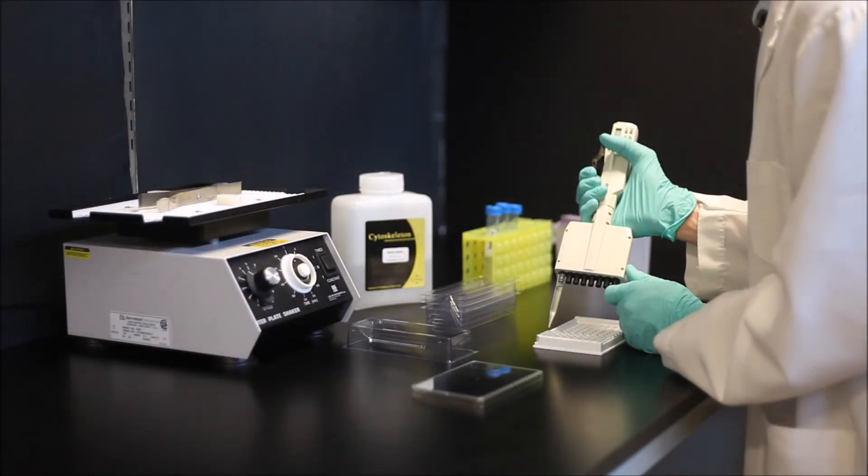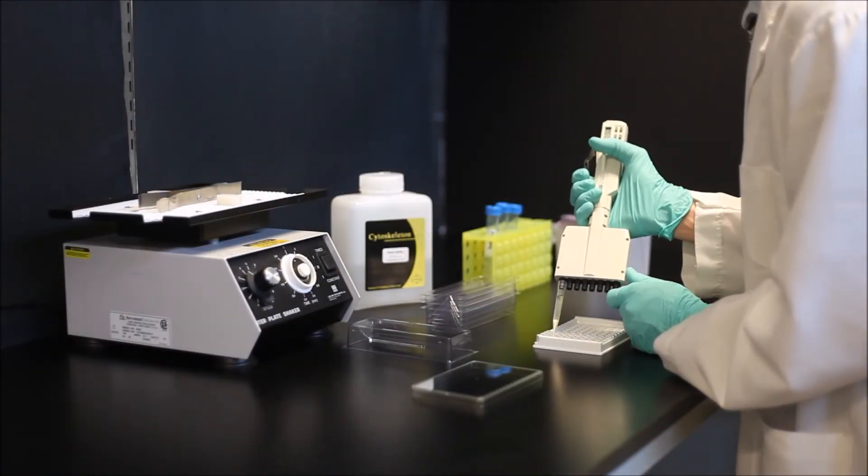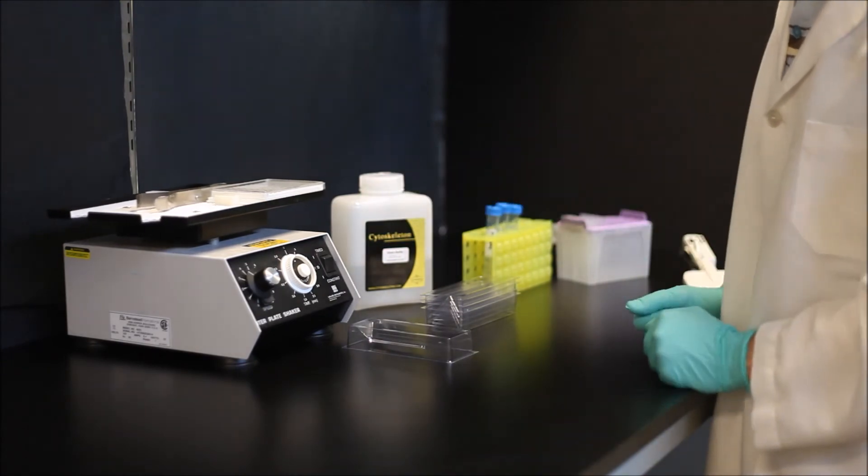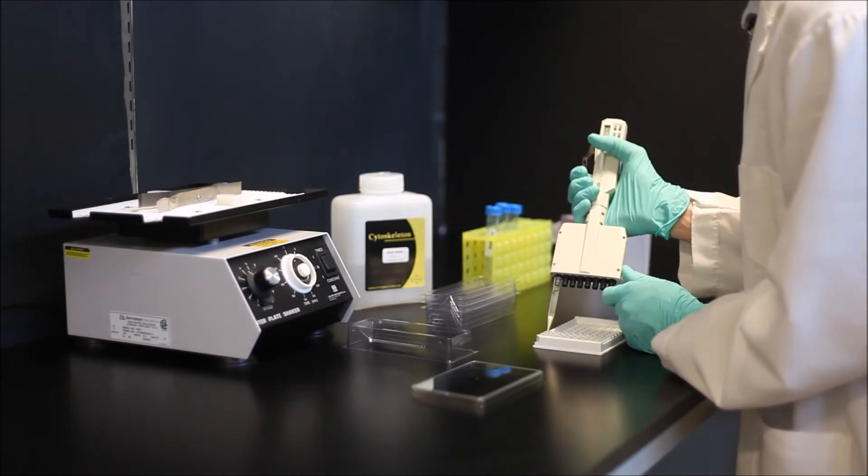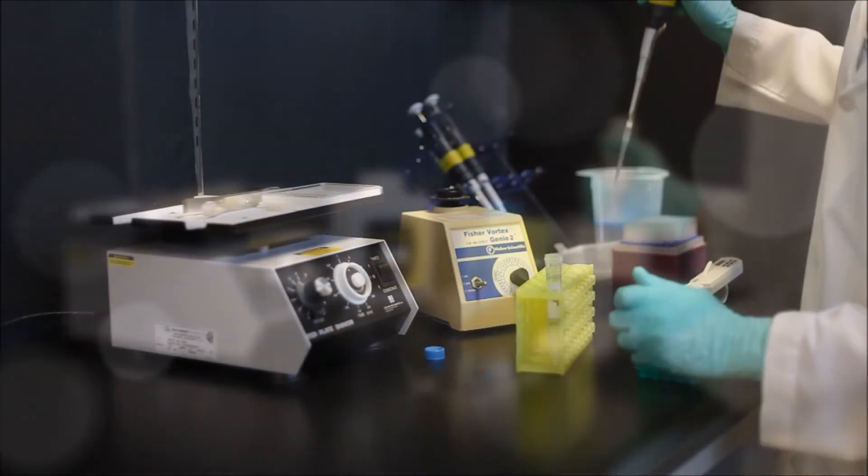Now add diluted primary antibody and incubate for 45 minutes on a room temperature plate shaker. This is followed by three more washes with room temperature wash buffer, followed by addition of an HRP conjugated secondary antibody. Consult the manual for antibody dilutions.